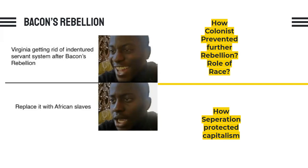Finally, how did the prevention of a unified enslaved African, indigenous, and poor white population serve as a protection for capitalism? In doing so, it created the formation of what we know as the middle class today. That middle class served as a buffer against the natives, the slaves, and the poor whites — a middleman between the elites and the lower class. By having the middle class join with the elites, they could prevent any uprising of the lower class and protect the status quo, allowing the elites to continue gaining more and more wealth.